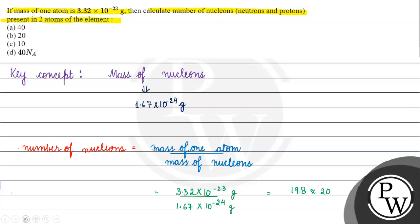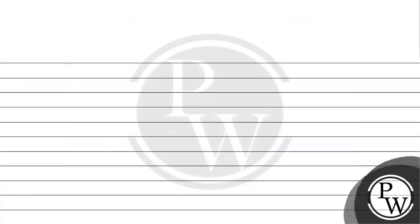So the number of nucleons in one atom is 20. If there are 20 nucleons in one atom, how much will it be for two atoms? It will be 2 times 20, which equals 40.